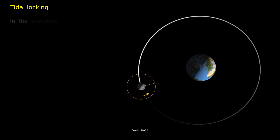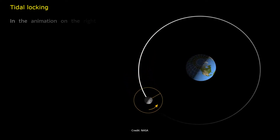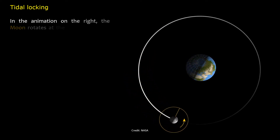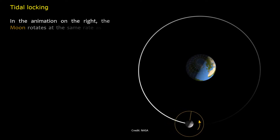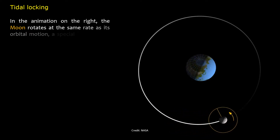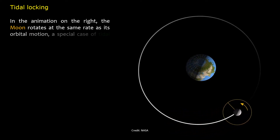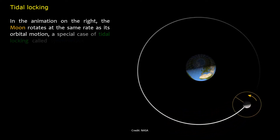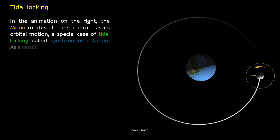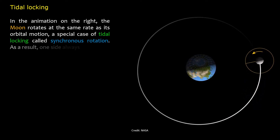In the animation on the right, the moon rotates at the same rate as its orbital motion — a special case of tidal locking called synchronous rotation. As a result, one side always faces us.